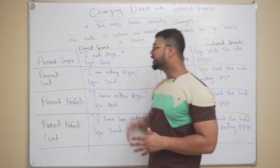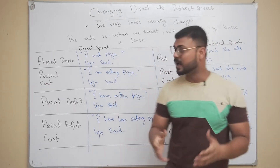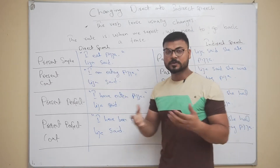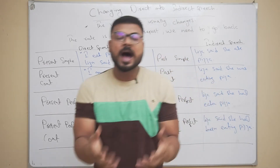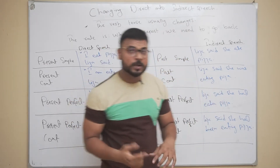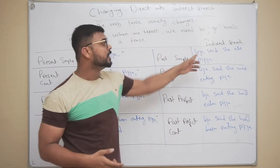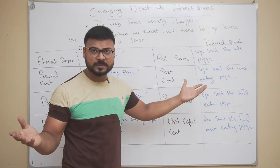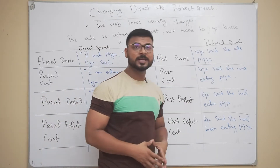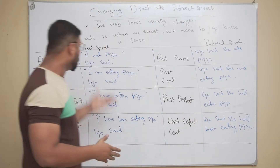Let's say the direct speech is: 'I eat pizza,' said Lisa. Or you can say: Lisa said, 'I eat pizza.' When you convert it into indirect speech, no quotation marks are needed — Lisa said she ate pizza.